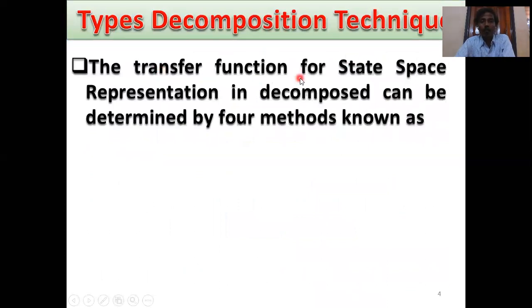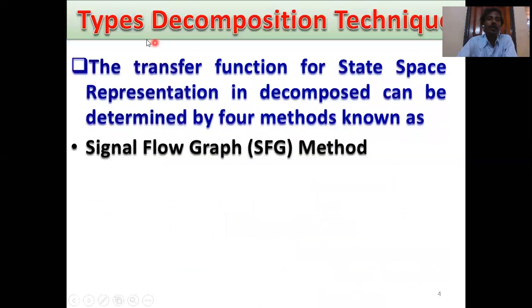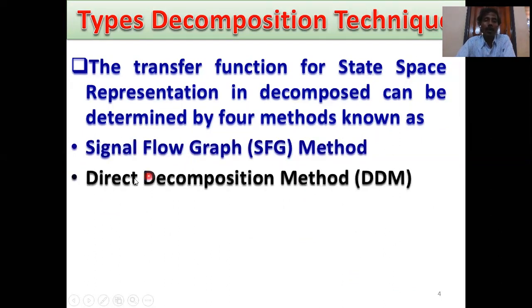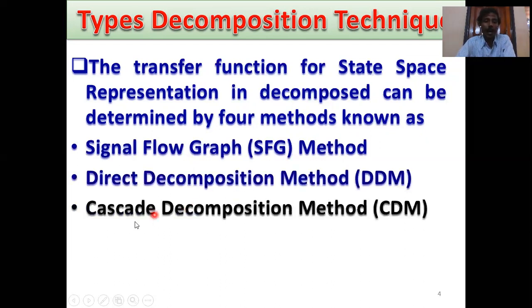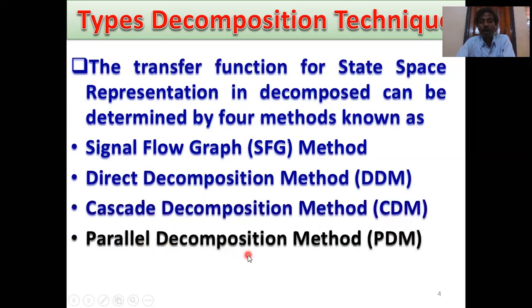The transfer function for state space representation can be decomposed by four methods. Number one: signal flow graph method, or SFG method. Number two: direct decomposition method, or DDM method. Number three: cascade decomposition method. Number four: parallel decomposition method, or PDM method.